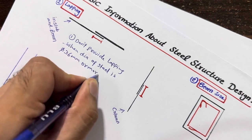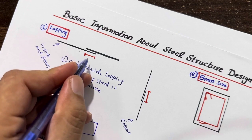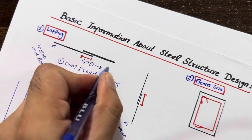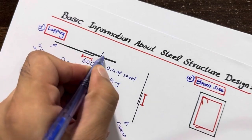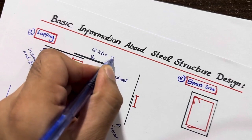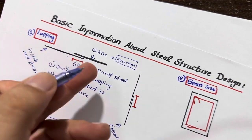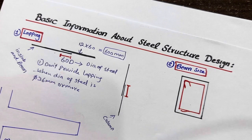For lapping length in an RCC slab or beam — whether it is a floor beam or plinth beam — it should not be less than 60d, where d is the diameter of the steel. For example, if we are using 12mm diameter steel: 12 × 60 = 720mm — sorry, about 600mm for 12mm. If using 16mm, then 16 × 60 gives the lapping length. This applies to all beams, plinth beams, and RCC slabs.